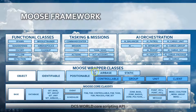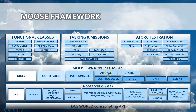The second layer is the Moose wrapper classes — a hierarchical set of classes that wrap the objects running within your mission: group objects, unit objects, client objects, static objects, and airbase objects. Each of these objects has their own methods, so you can directly modify the behavior of a group object within your mission using those APIs.